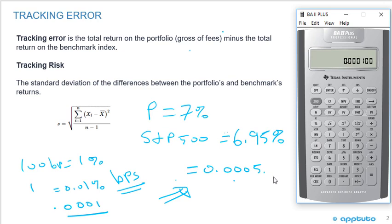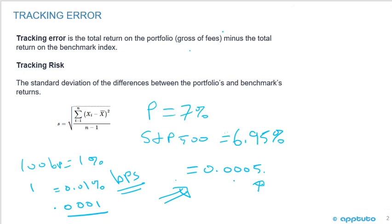So in this case, if the portfolio had a 7% return and the S&P 500 6.95% return, then the difference is 0.0005, and we know that the tracking error is within five basis points. That's a little bit extra for this LOS, but I just wanted to remind you that sometimes you'll see...